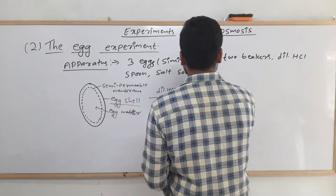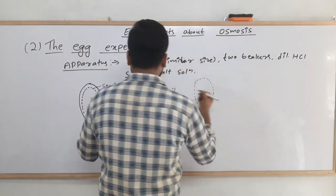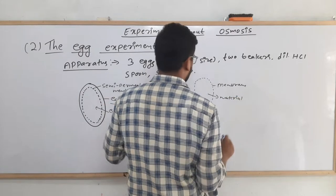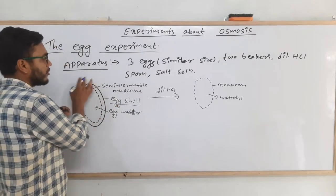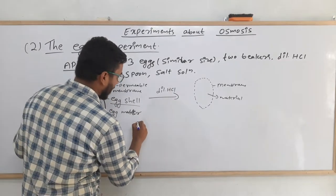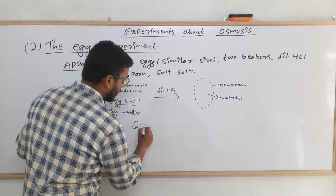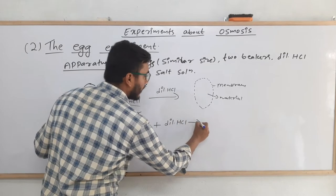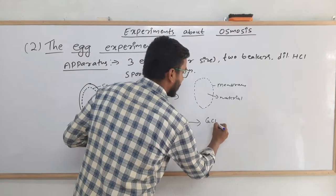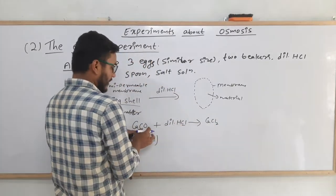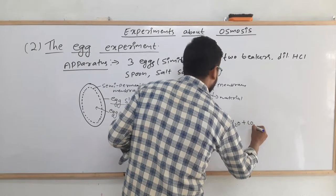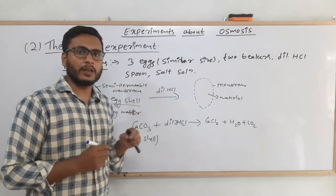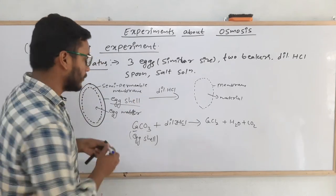There is a chemical reaction that causes the shell to dissolve. The egg cell is made up of calcium carbonate (CaCO₃). When we put it in dilute hydrochloric acid (HCl), the reaction produces calcium chloride (CaCl₂), water (H₂O), and carbon dioxide (CO₂). This balanced reaction is taught at the school level, and it is a slow process taking three to four hours.